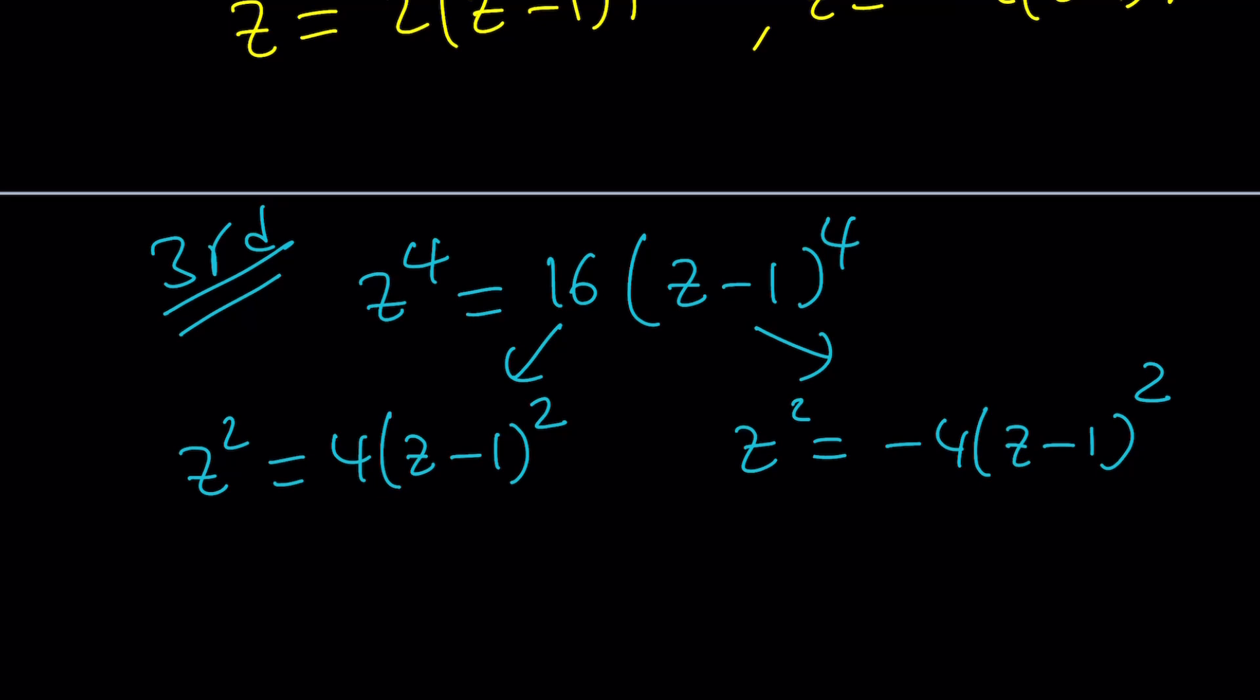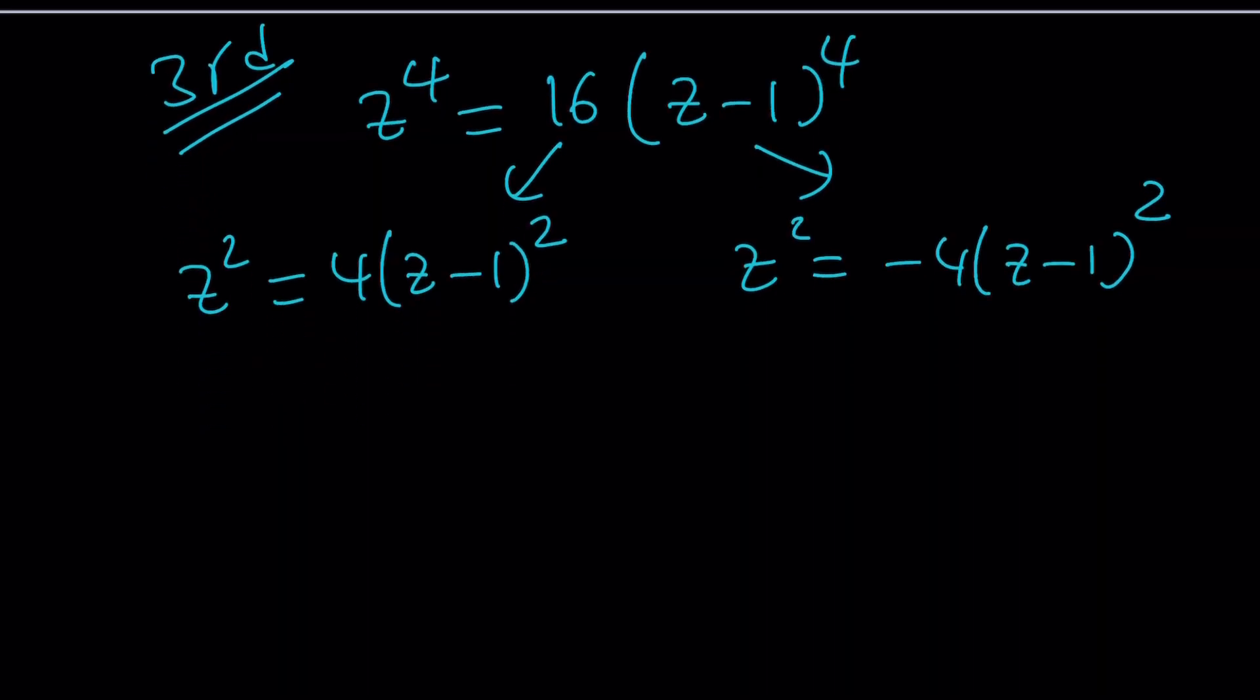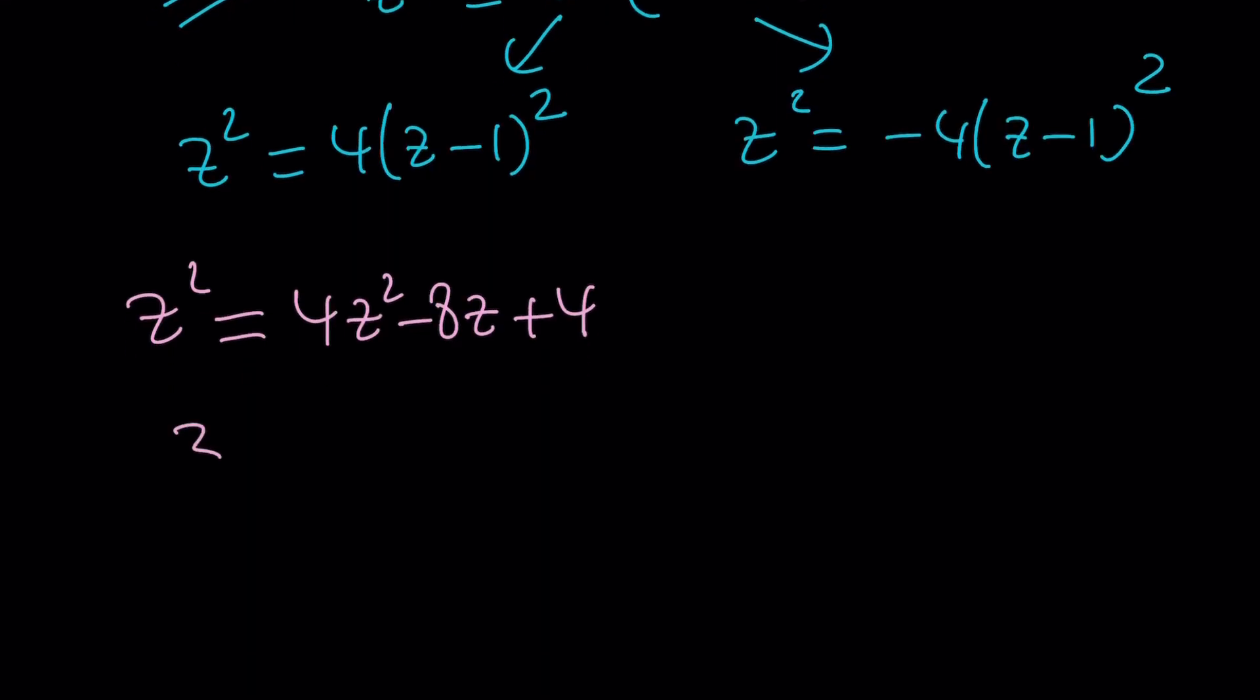But guess what? These are quadratic equations, and each of them have two solutions that give us all the solutions. That's what's really cool about the third method. But I don't want to say that's my favorite, because you're going to get to decide, but it's a really good method in my opinion. Anyways, so let's go ahead and expand this. This is going to be 4Z squared. Remember, we're going to get a minus 2Z, so it's going to be minus 8Z plus 4.